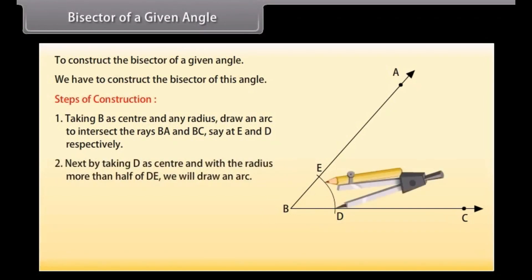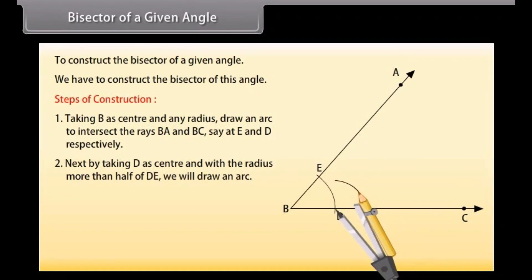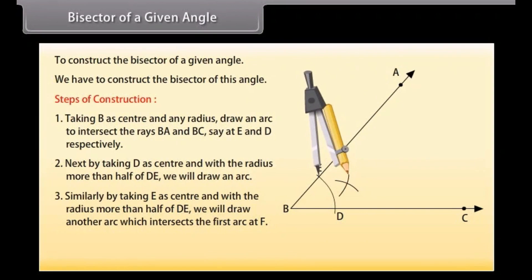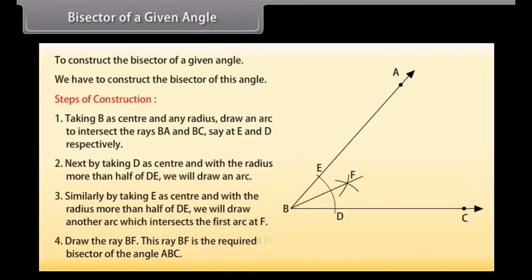Next, taking D as center and with a radius more than half of DE, we will draw an arc. Similarly, taking E as center and with a radius more than half of DE, we will draw another arc which intersects the first arc at F. Now draw the ray BF. This ray BF is the required bisector of angle ABC.